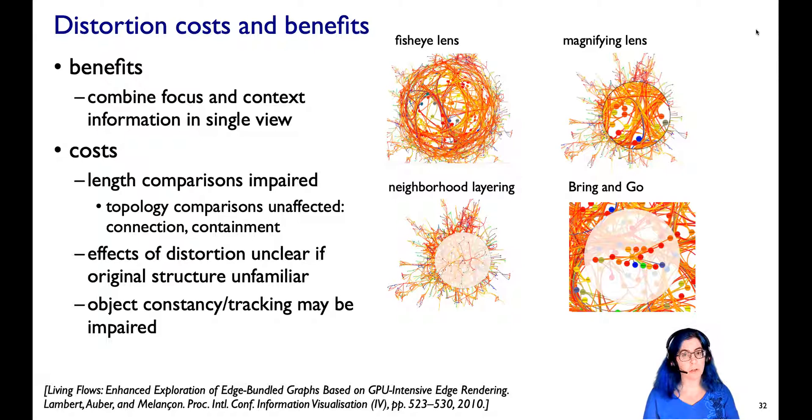Now one issue, just like with cartograms, is if you don't have a really clear picture of what the original layout was, it can be hard to understand what the distortion is with respect to the original or even if it's distorted at all. So a lot of these methods have some sort of explicit indication of what's happening to help mitigate that effect. Also there have been some studies that show that people do have some difficulties in keeping track of what's happening as these objects are moving around in the screen in a distorted way.